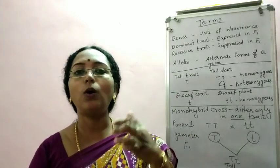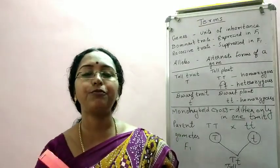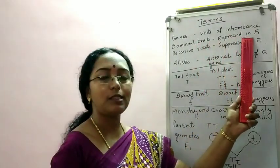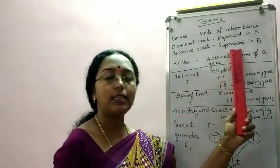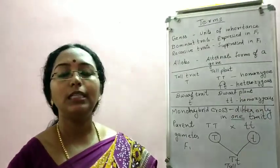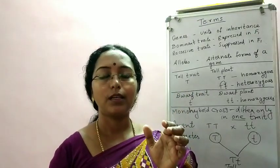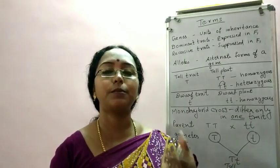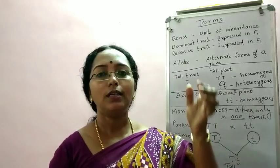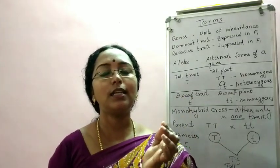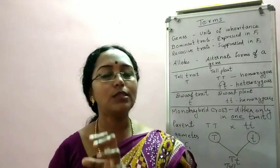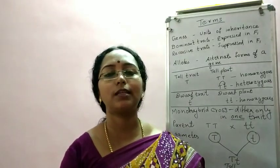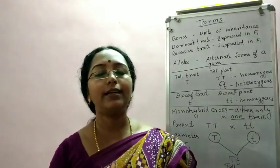Those forms which were not expressed, or in other words which were suppressed in the F1 generation, are called recessive forms or recessive traits. So dominant traits are traits expressed in the F1 generation; recessive traits are traits suppressed in the F1 generation. In the previous video, the seven characters and their two forms are listed — those forms listed first against each character are all dominant forms, and all those second forms were suppressed in the F1 generation — those are recessive forms.